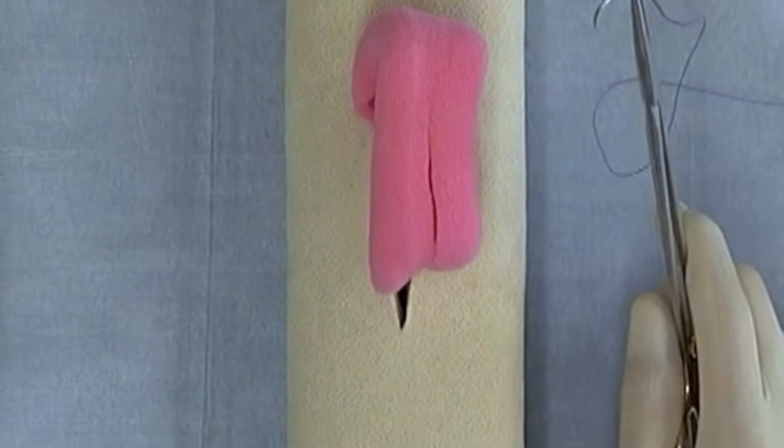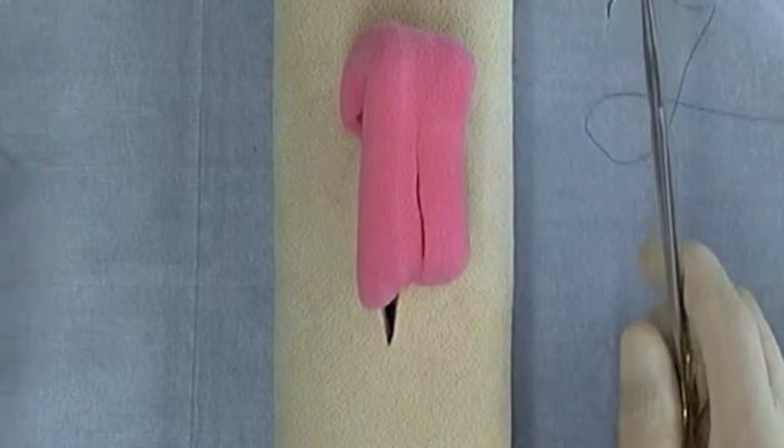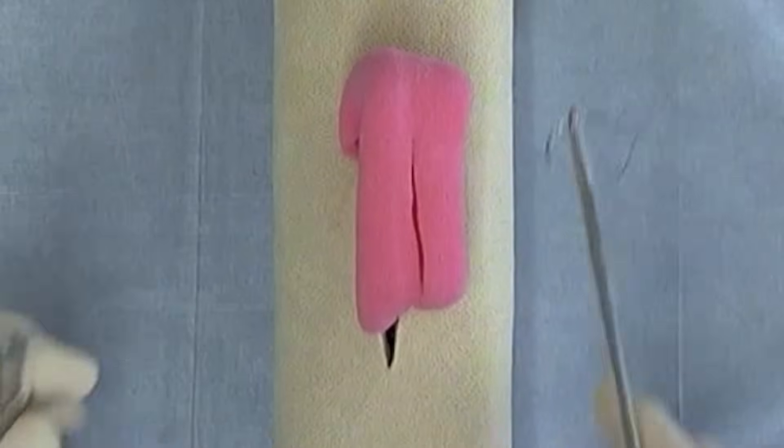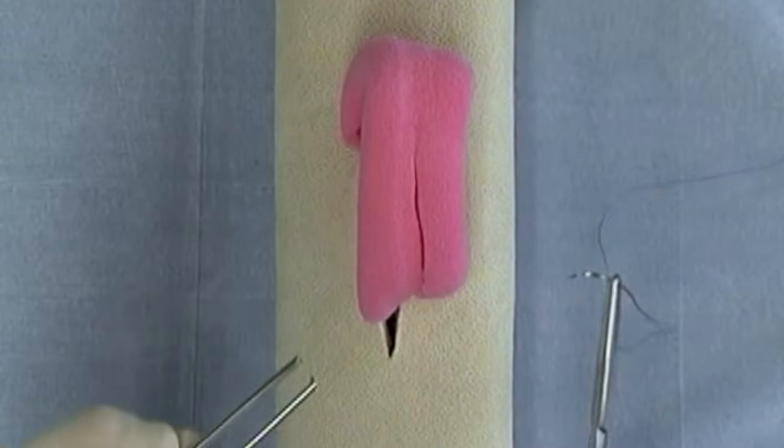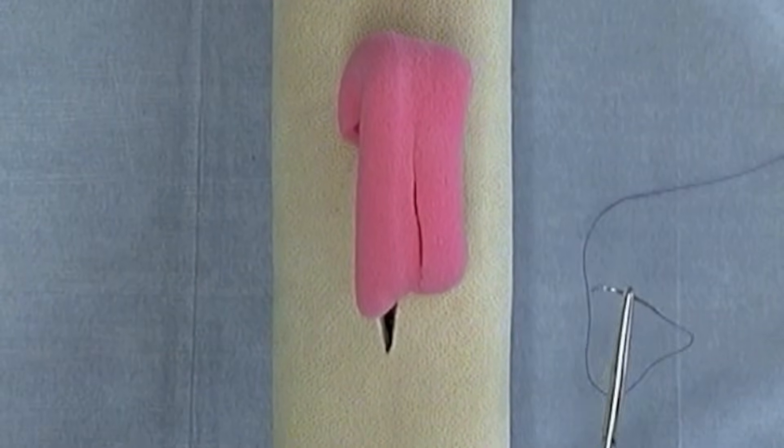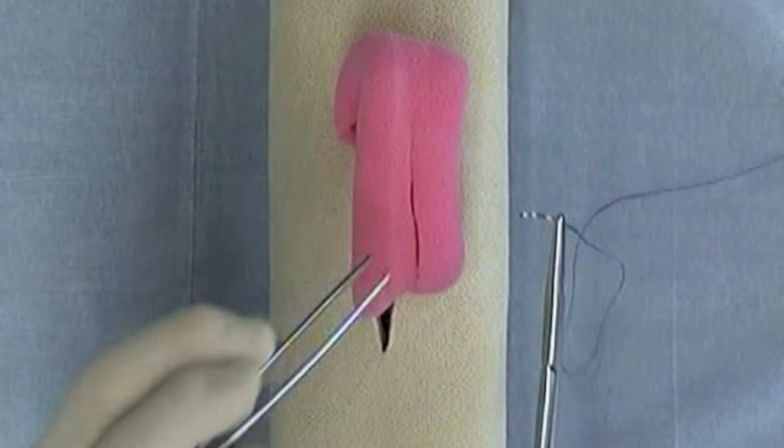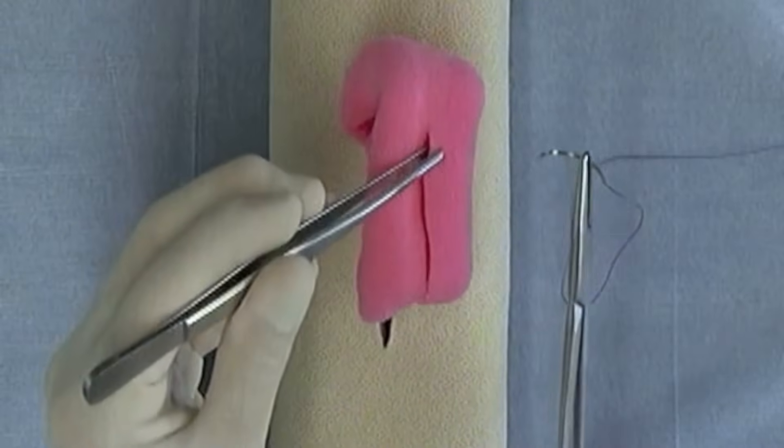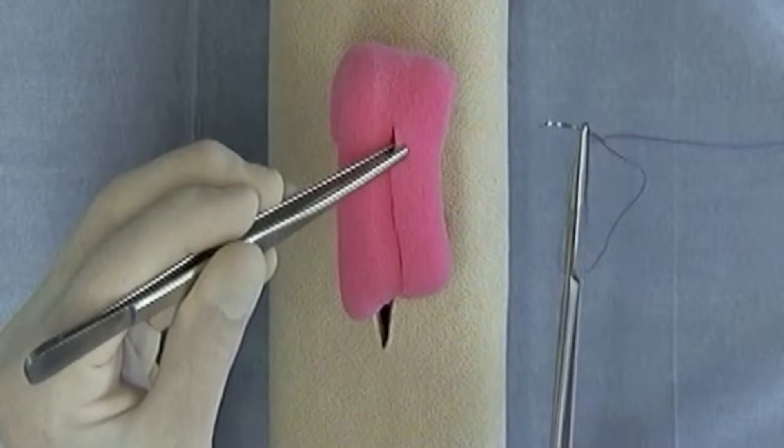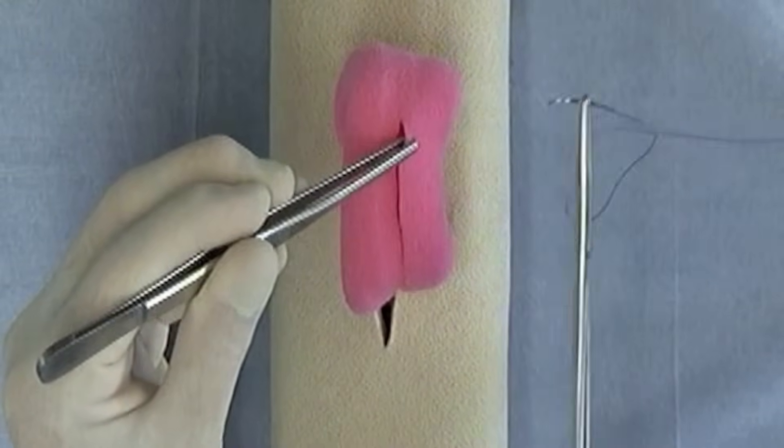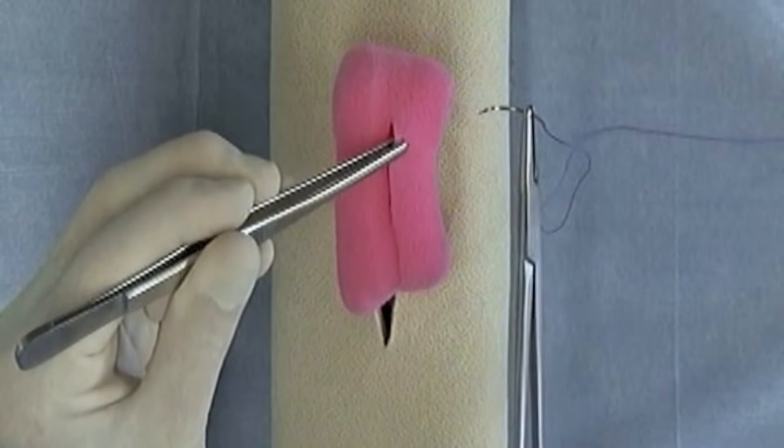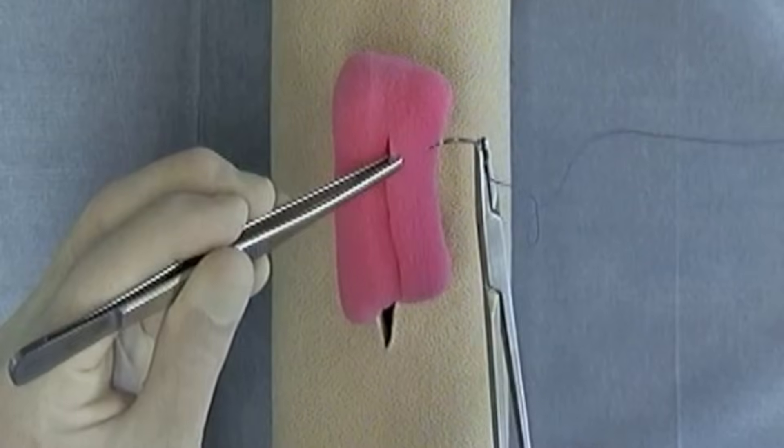As I discussed in other portions of these video segments, to begin a continuous pattern, you can begin with a simple interrupted bite and then perform the continuous pattern of choice thereafter. With a Lembert, you could begin with a Lembert suture as well, and so we'll begin this continuous pattern somewhat different than others, but remember that you can always, for the sake of this course or in life, begin any continuous pattern generally with a simple interrupted suture construct.